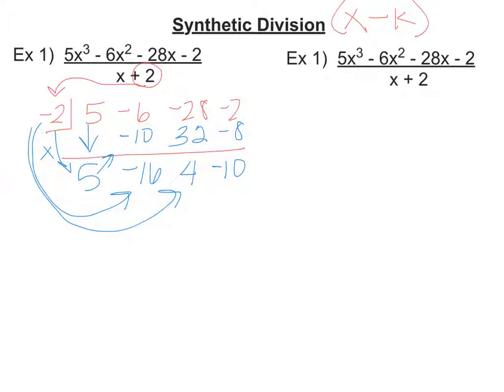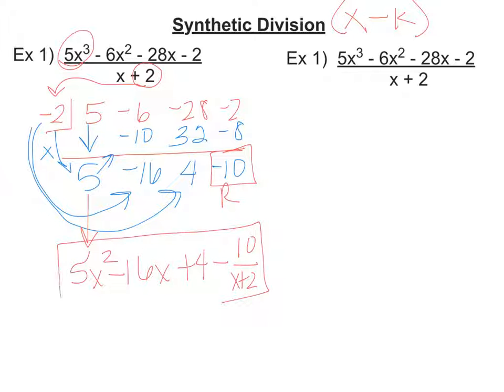Now, this answer, these values are the coefficients of your answer. So notice that this is 5x cubed, so we go down one degree. So this 5 is now a 5x squared. Then you just go down in order, minus 16x plus 4. Notice I still have this negative 10. That is my remainder. So then you just write negative 10 over your divisor of x plus 2, and that is your answer. Pretty sweet, right?